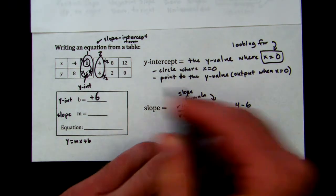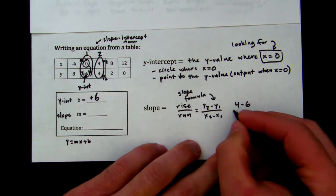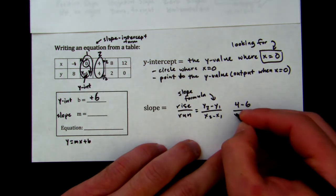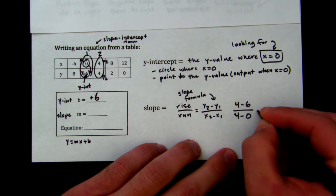4 minus 6, y2 minus y1, over x2, which is 4, minus x1, which is 0.